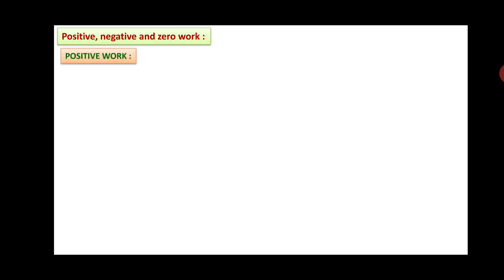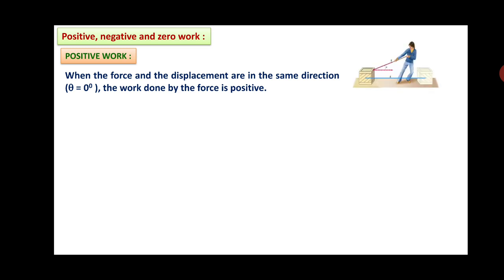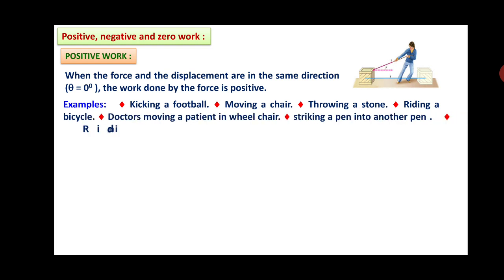Now, positive, negative and zero work. Positive work: when the force and the displacement are in the same direction, that is θ = 0, the work done by the force is positive. See in this figure. Examples include kicking a football, moving a chair, throwing a stone, riding a bicycle, doctors moving a patient in wheelchair, striking a pen into another pen, riding a skateboard, pushing and moving a table. These are examples of positive work because the displacement is in the direction of the applied force and the angle is zero.